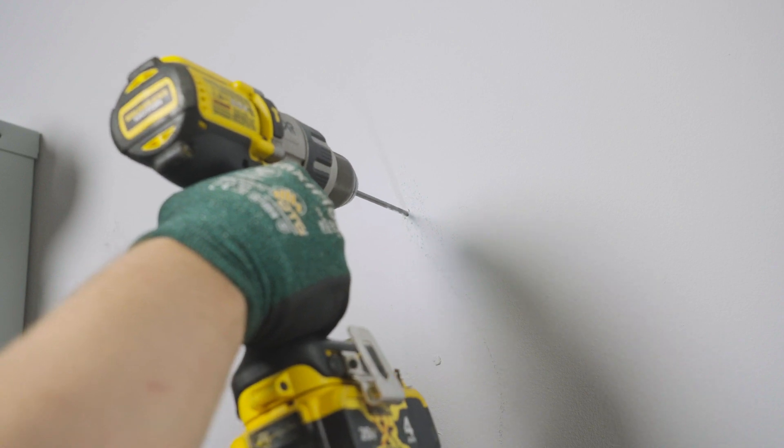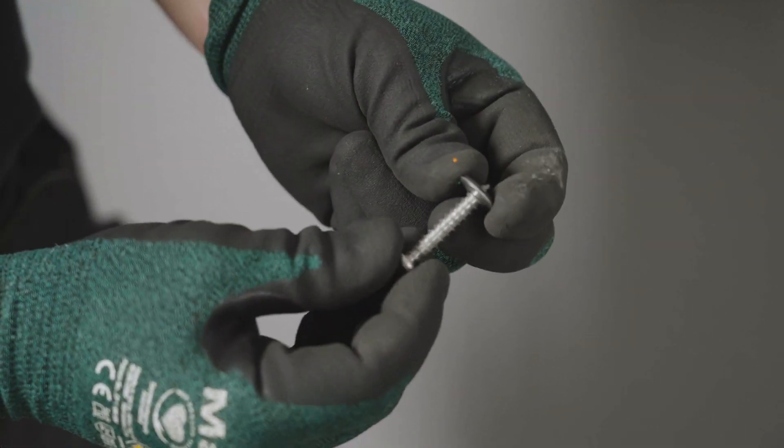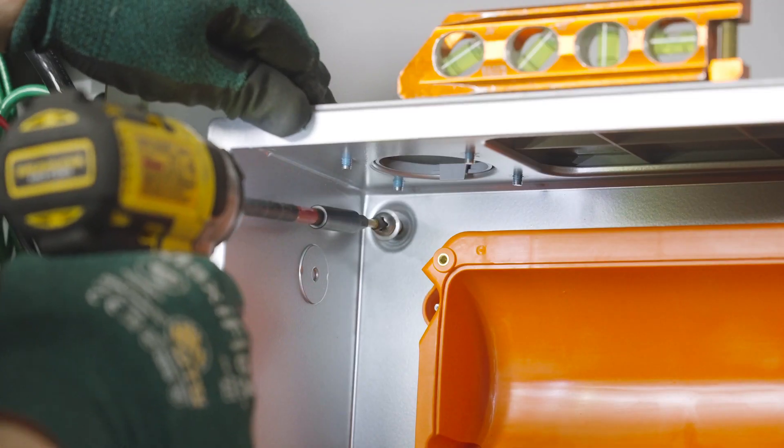Drill pilot holes, then use the sealing washers from the accessory kit along with the appropriate fastener for the wall type.